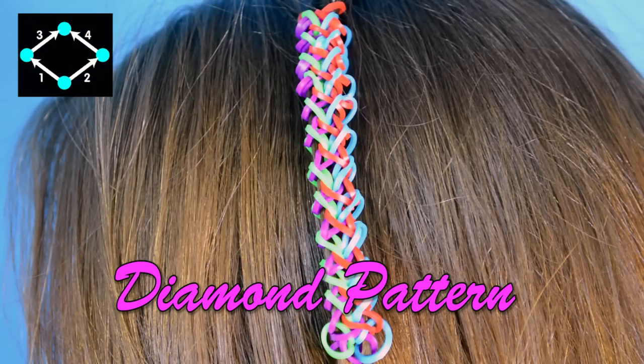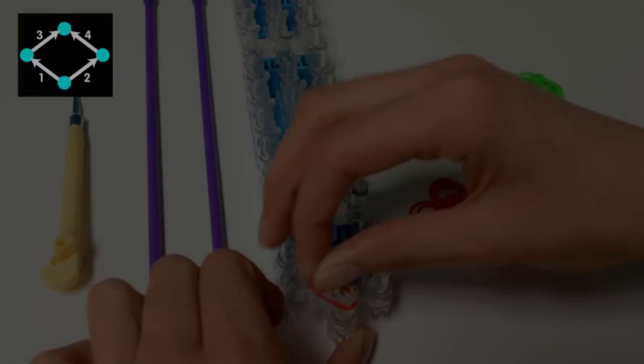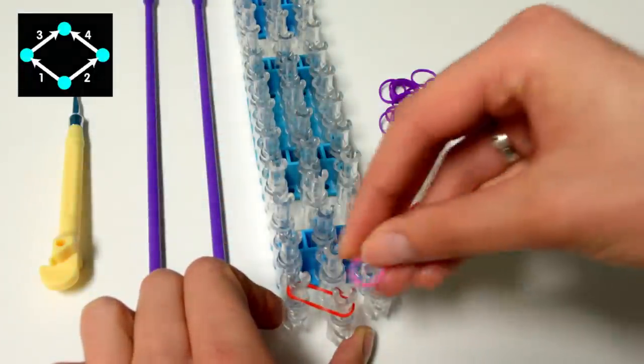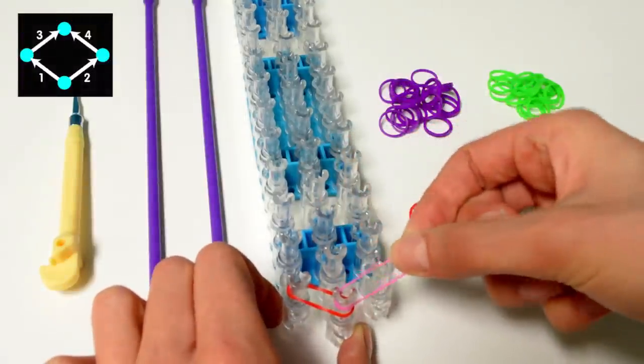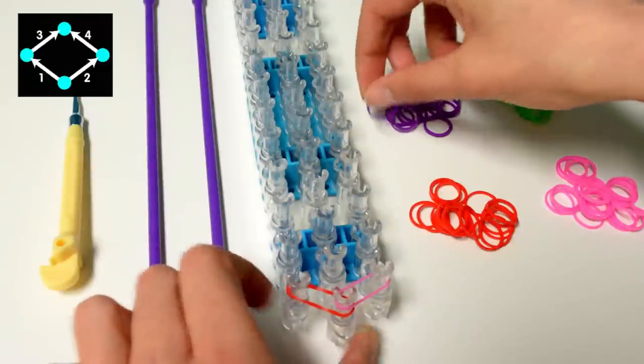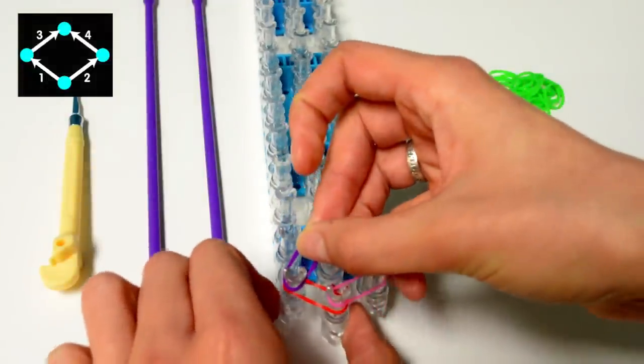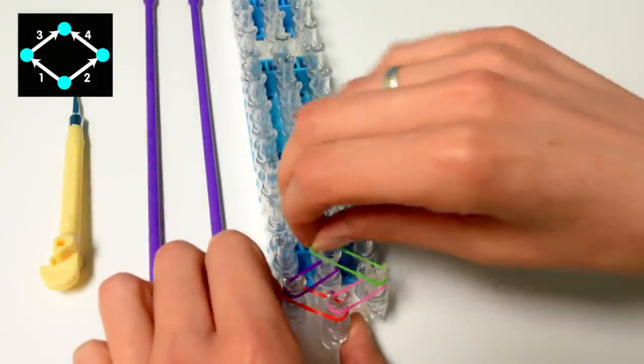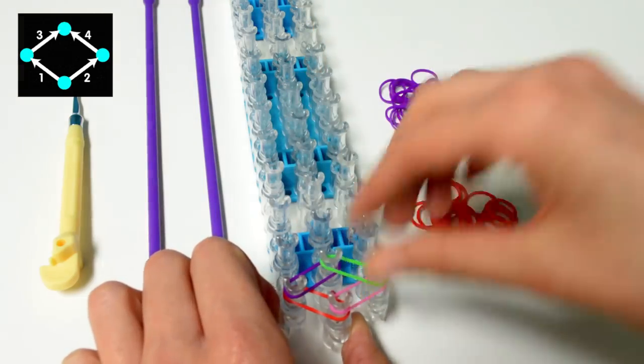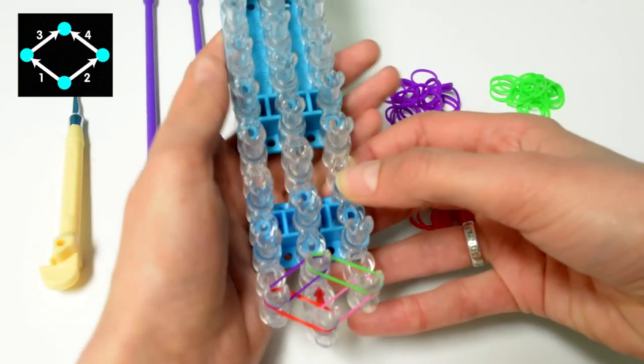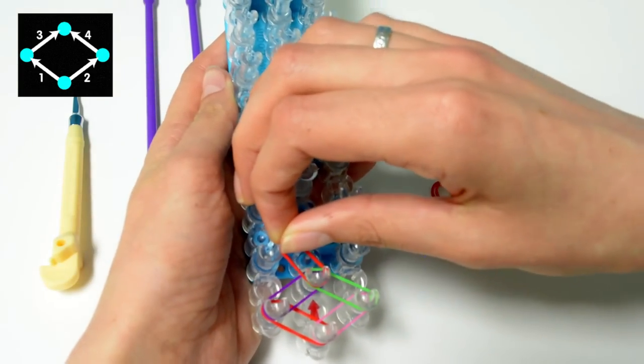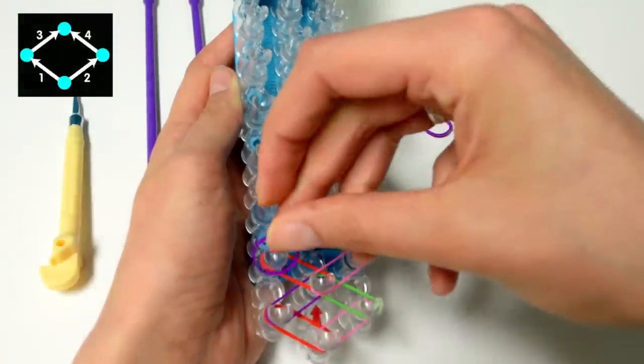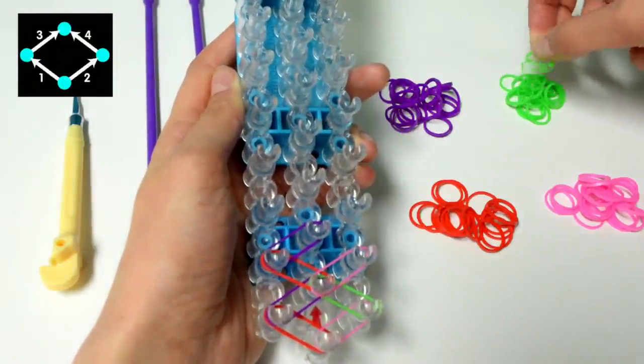We're going to start at the red arrow and place your first band on the center pin to the left, your second band from the center pin to the right, your third band from this first left peg back to the center, and your fourth band from the right peg to the center. And then you're just going to continue that same pattern all the way up your loom. Center to the left, center to the right, left to the center, and right to the center.